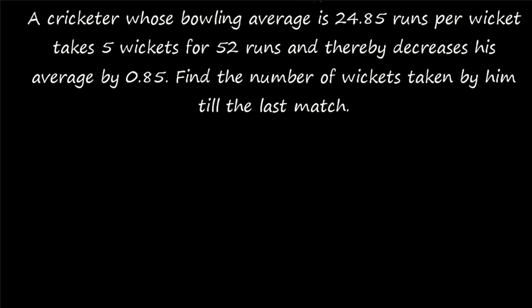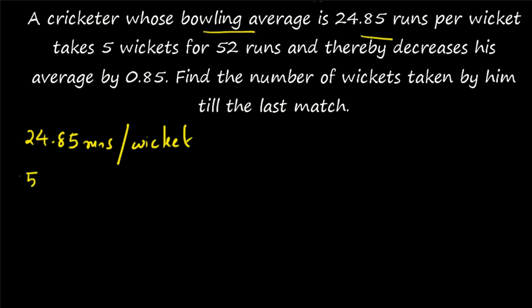Question number 3: a cricketer whose bowling average is 24.85 runs per wicket takes 5 wickets for 52 runs and thereby decreases his average by 0.85. Find the number of wickets taken by him till the last match. Here the bowling average is given — not batting average. Bowling average means total number of runs divided by total number of wickets, i.e., how many runs per wicket. His bowling average was 24.85. In his next match, 5 wickets are taken for 52 runs and his average decreases by 0.85.